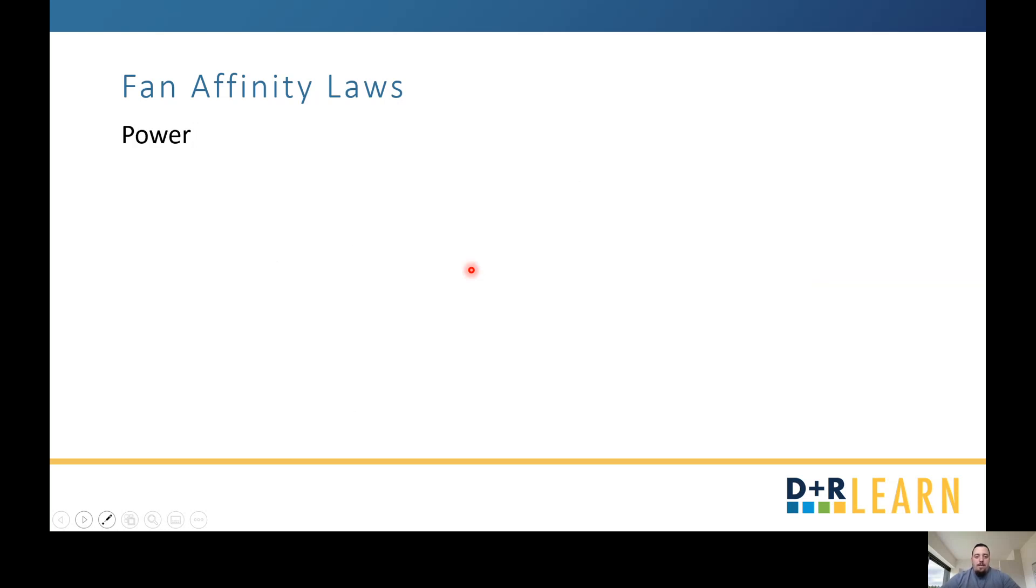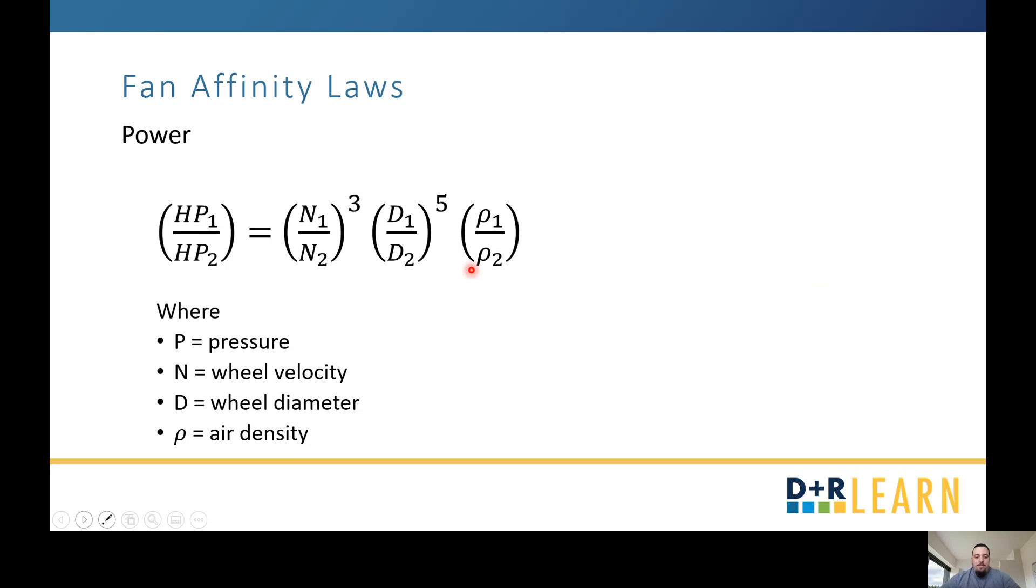Moving on, we have our last law, which is in regards to power. Here I have it as horsepower, but again, if you wanted to do kW or watts, you're more than free to do so. Here's our wheel velocities, they're cubed. Our wheel diameters are now to the fifth power, and then our air density is here. So knowing these three laws, I'm now going to walk you through a couple examples on how you can apply them.